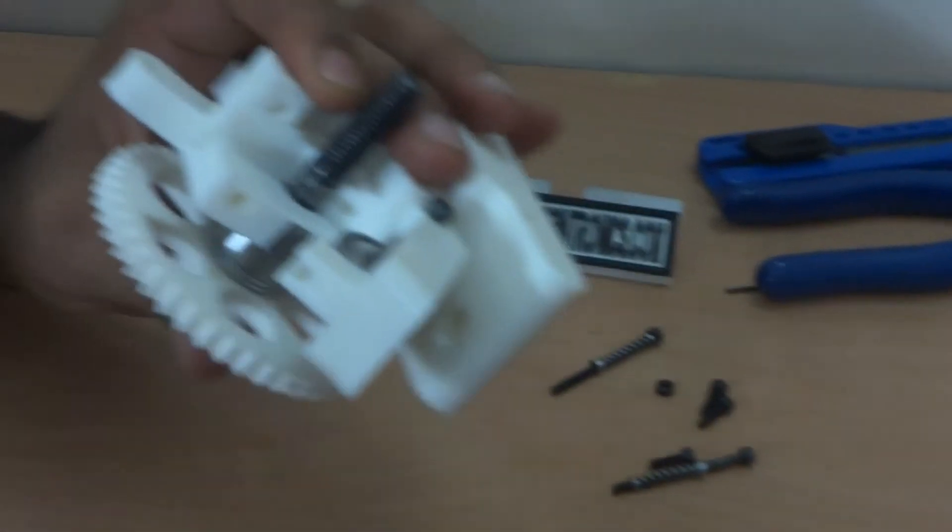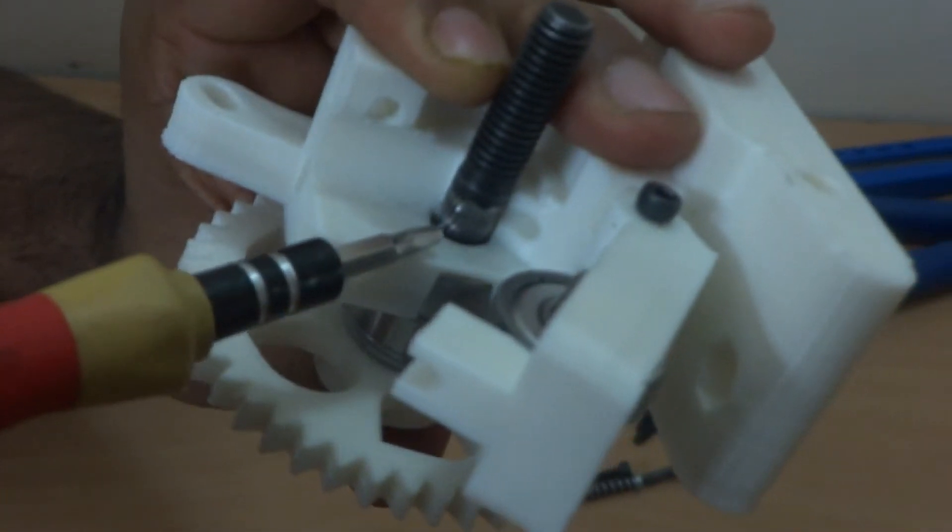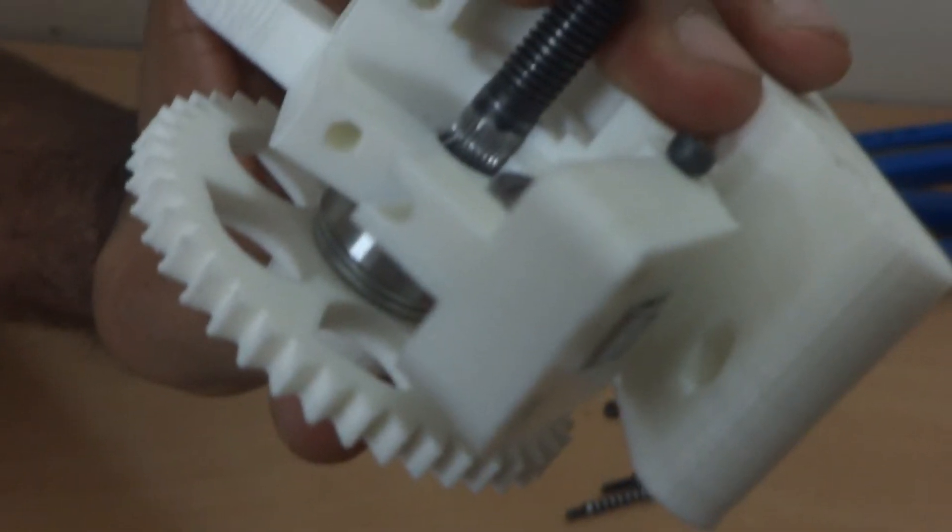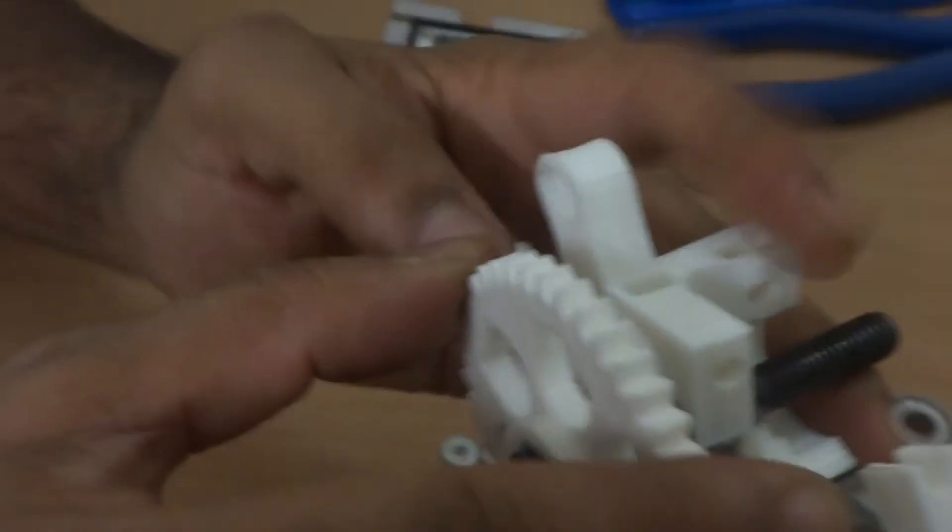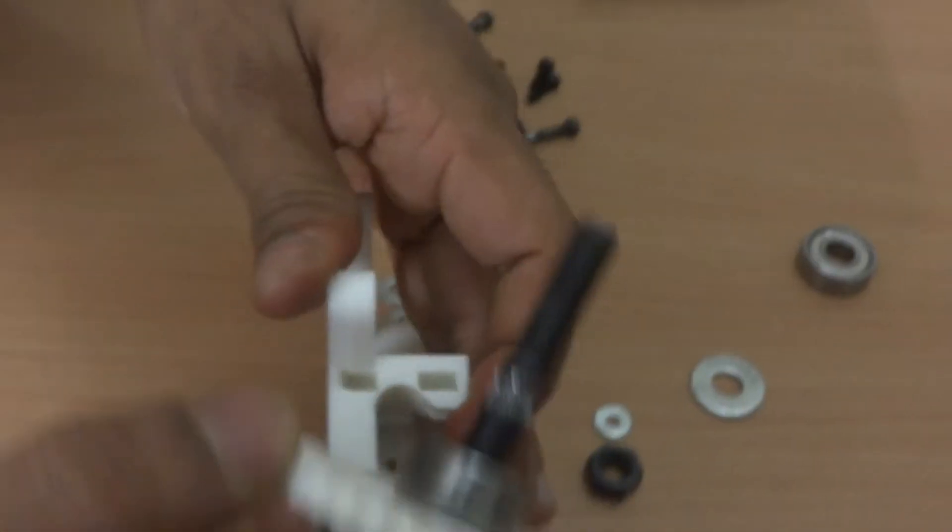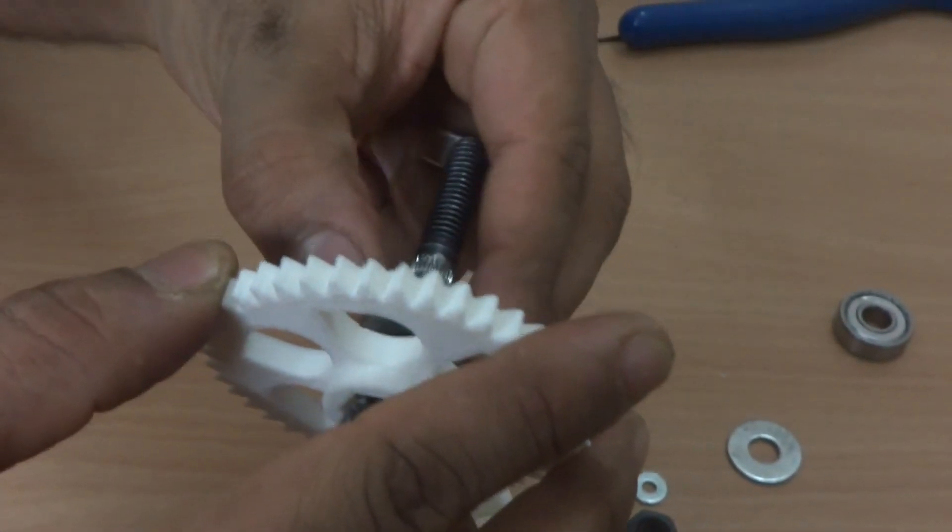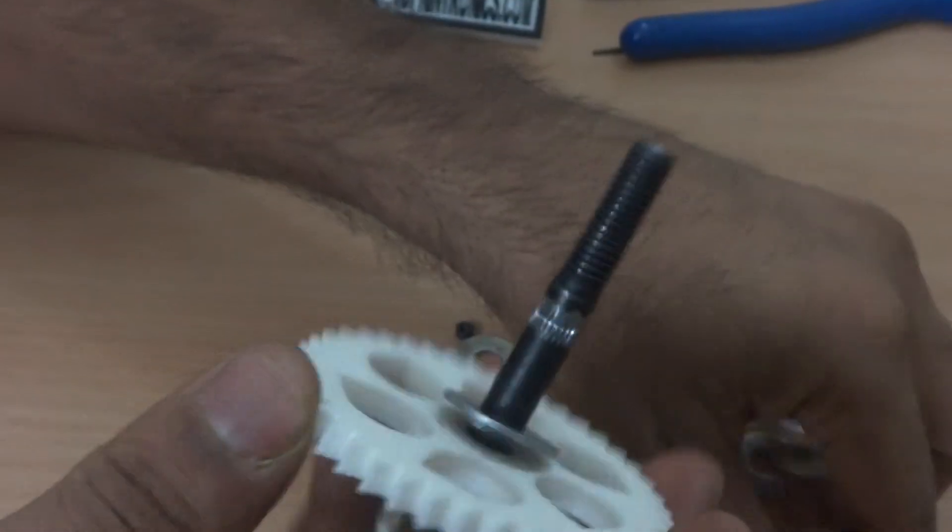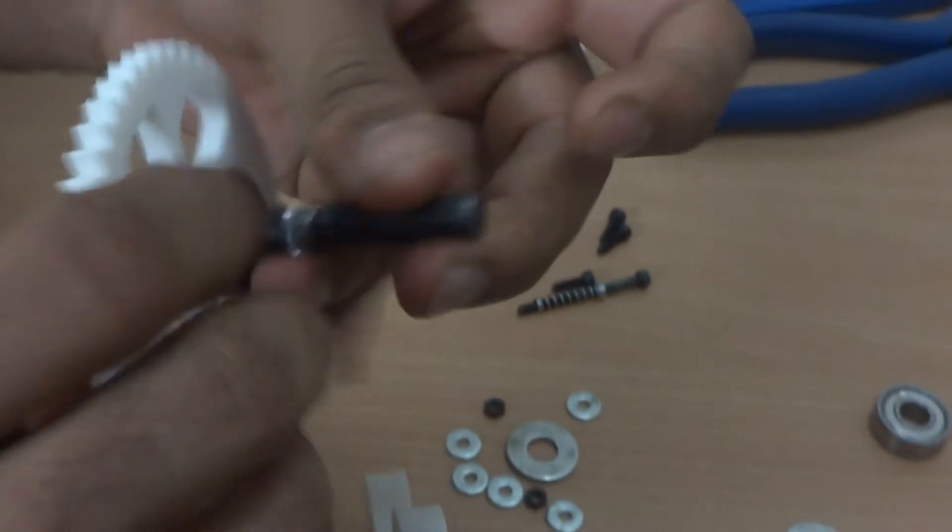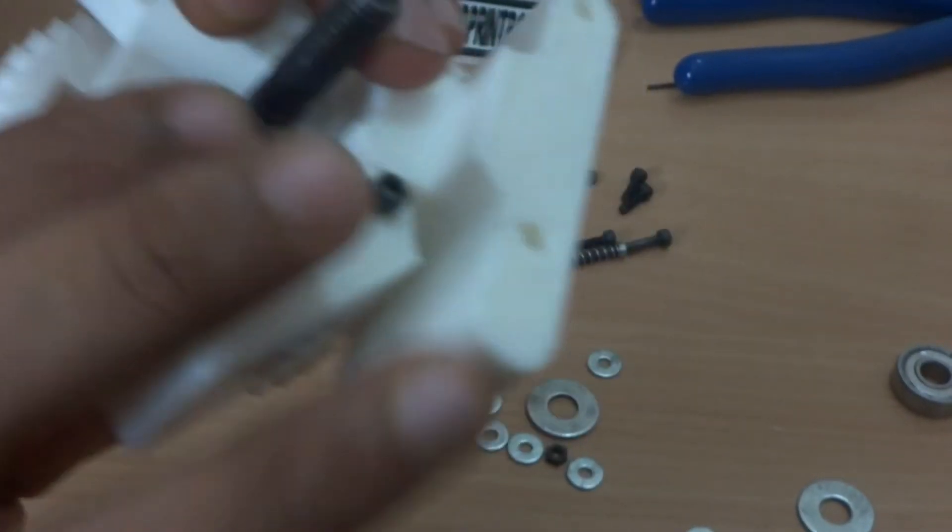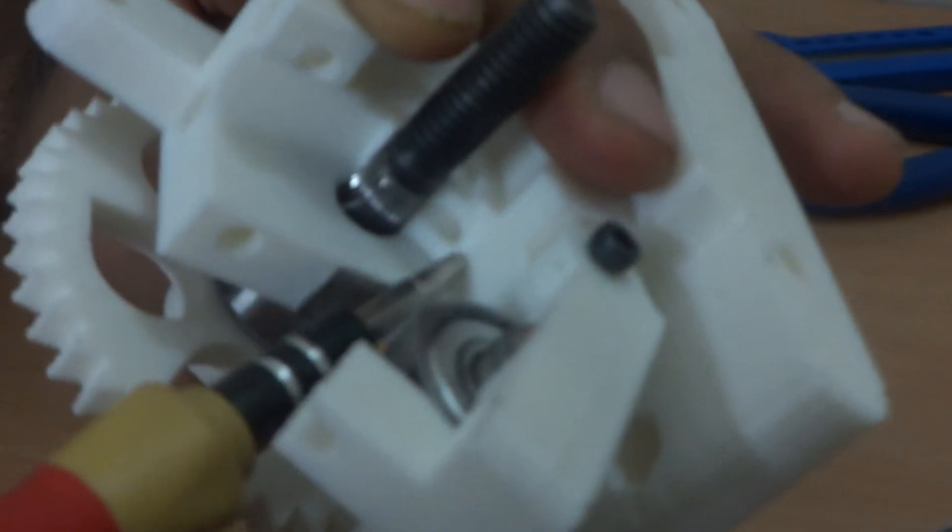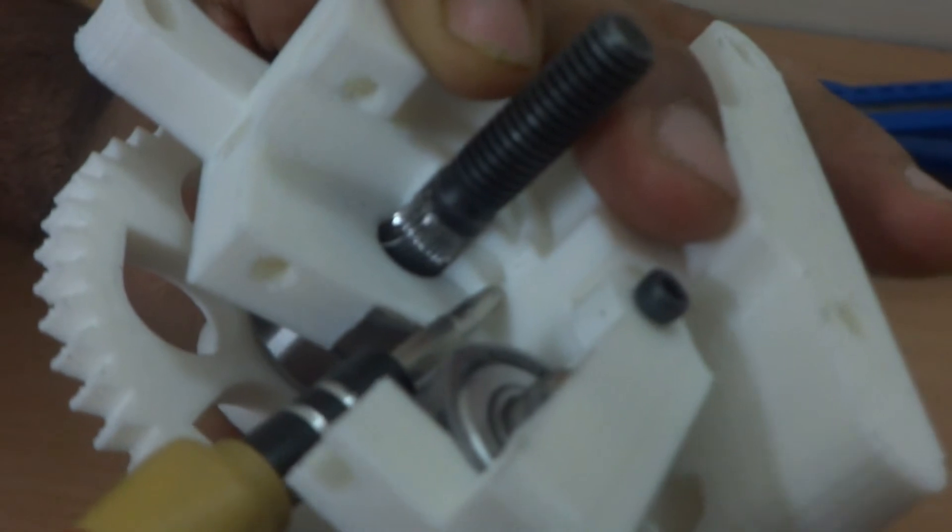Now here you must take care that the hob portion should align with the hole of the extruder. Now here it is not aligning. So we will just remove one more washer.